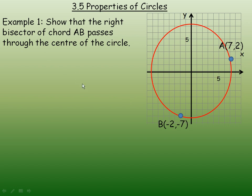This lesson will show how to verify some properties of circles. In the first example we are asked to show that the right bisector of the chord AB passes through the center of the circle. The right bisector means the line that goes through exactly the middle of AB and is perpendicular.